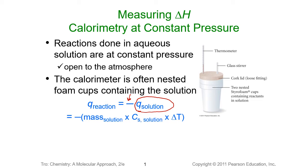We measure the mass of the solution, and we either calculate or use the specific heat of the solution, and measure the change in temperature. Typically, if no values are given to you, you can assume the specific heat of the solution is that of water. If a specific heat is given to you, then you want to use that value for the solution.